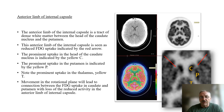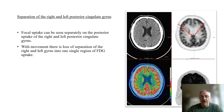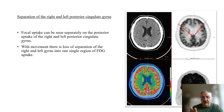The second quality indicator is the anterior limb of the internal capsule. There should be clear separation here between the head of the caudate nucleus and the putamen. This can be lost when there's movement and rotation of the brain. The third component is to identify both the right and left posterior cingulate gyrus. They should be seen in their parallel components as two separate structures, and where there is movement — both rotation and yaw — this can be lost.